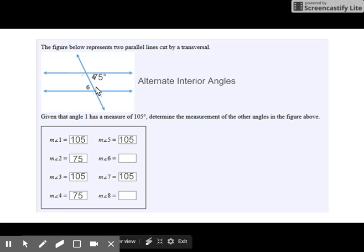Angles four and six are alternate interior angles, congruent. Angles four and eight are corresponding angles. They're also going to be congruent.